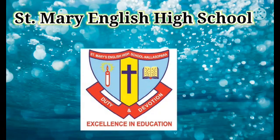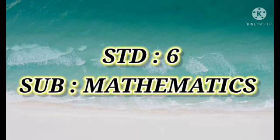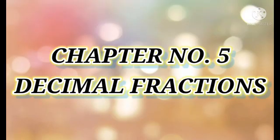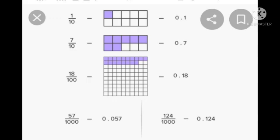Welcome students to the online class, Standard 6, subject Mathematics, Chapter 5: Decimal Fraction. Today we are going to study about decimal fraction. A decimal fraction is one where the denominator — that is, the bottom number — is a power of 10, such as 10, 100, 1000, and so on, as you can see in the picture. This is called your decimal fraction.